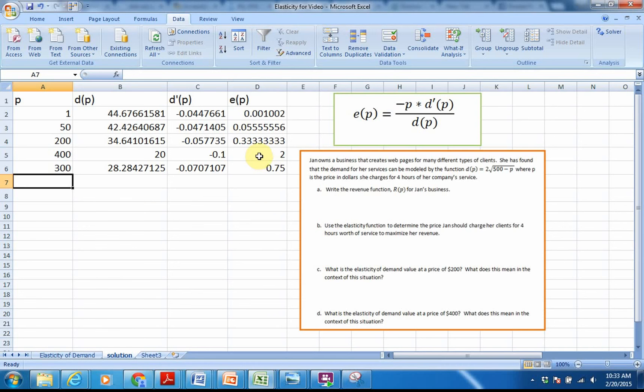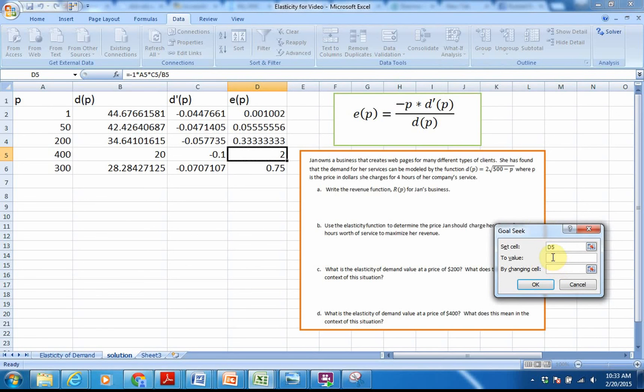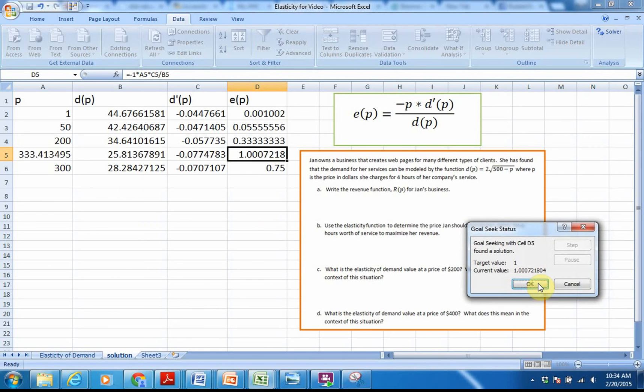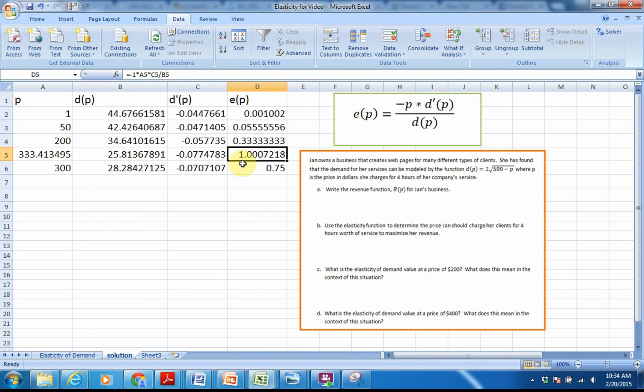So, to answer Part B, what we're going to do is we're going to goal seek. So, let's use this value, this 2. And now, for the first time, we do not want to goal seek to 0. We want to goal seek to 1. This is the only occasion. The only time you goal seek to 1, unless I've asked you to, is when you're using the elasticity function. The cell that we're going to change is still the input cell, our price here. And what you can see is that unit elasticity occurs, we get a value of E of P of 1, when our price is approximately $333.41.